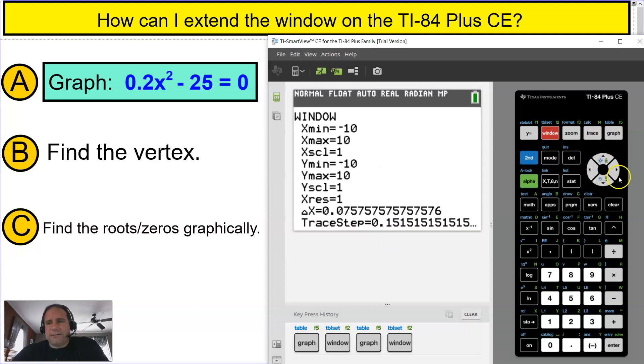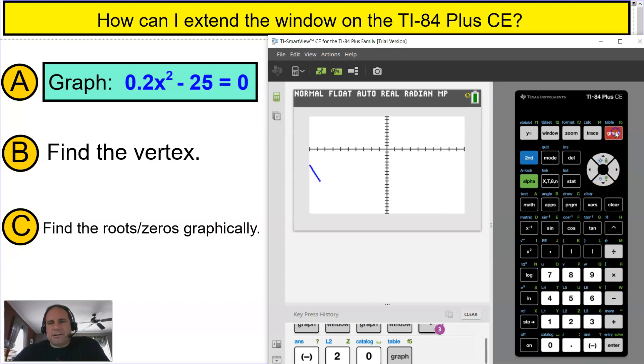I'm going to press window again and I'm going to go down all the way to y-min and extend it to negative 20. Right, and then press graph. You notice it's still off of your screen.